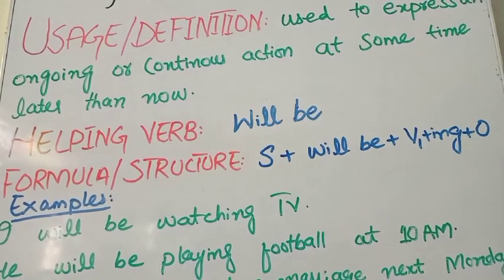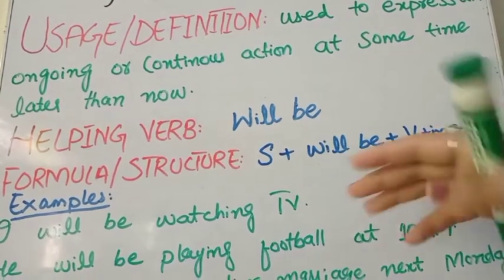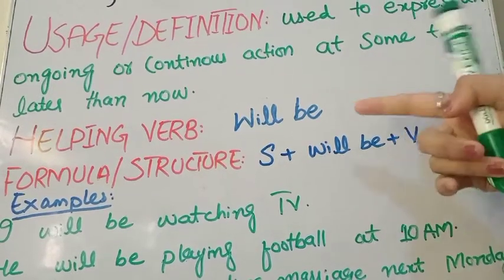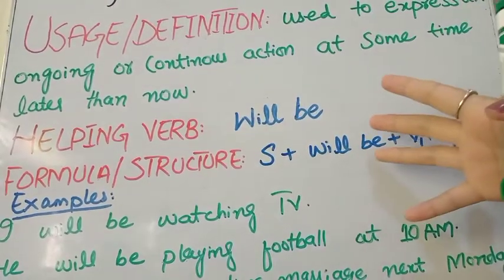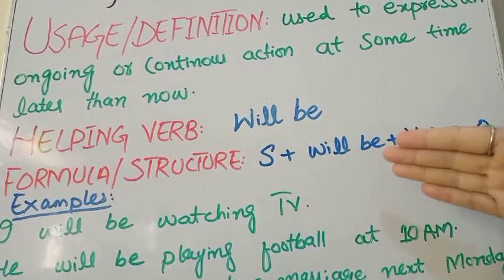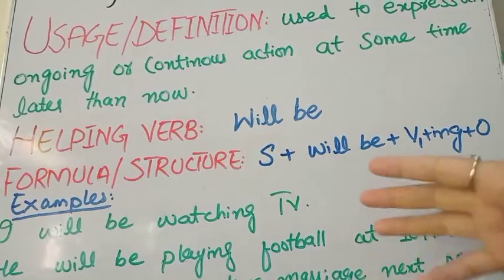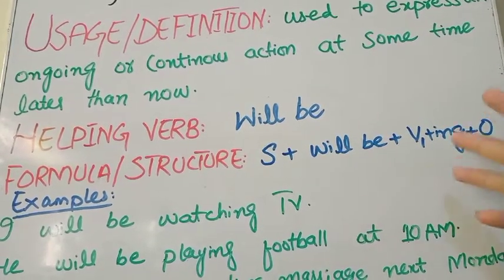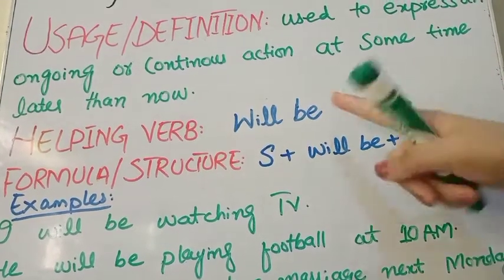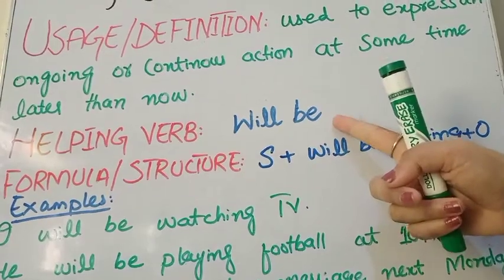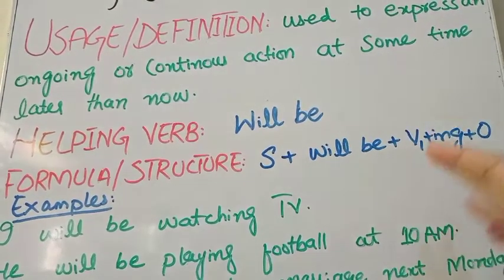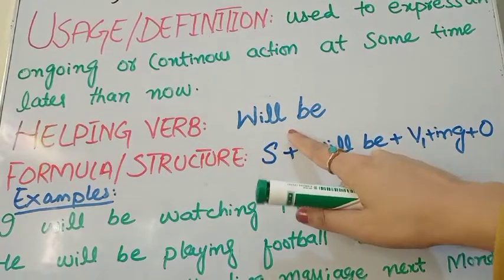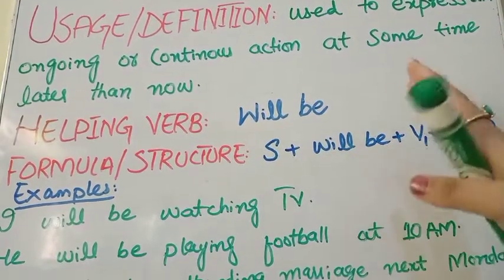I mentioned 'will' and 'shall.' 'Shall' has very few uses and is mostly skipped. So whether it is the first, second, or third person — singular or plural — we use 'will be' with everyone. In this tense, you have to use this helping verb with all persons.